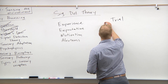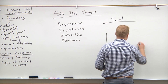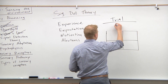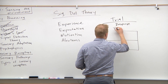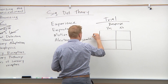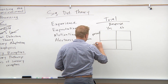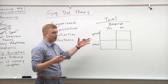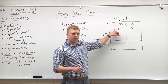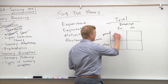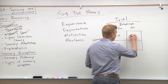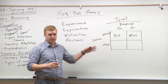In a signal detection theory trial, the response options are yes or no, and the stimulus is either present or absent — giving four different possible outcomes. If the stimulus is present and you say yes — you did see or hear something — that's called a hit. If it was present but you didn't pick up on it and responded no, that would be a miss.